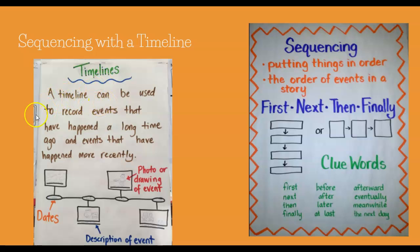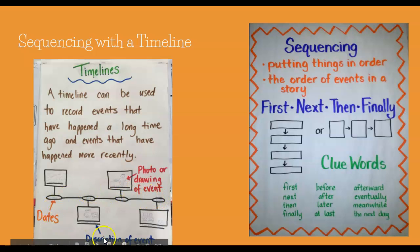A timeline can be used to record events that happened a long time ago and events that have happened more recently. On this timeline you'll notice it has dates — 2002, 2003, 2004, 2005 — and underneath each date is a description. They also included a photo, which is what you guys are going to do today.